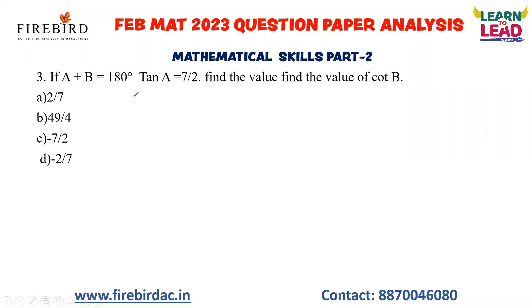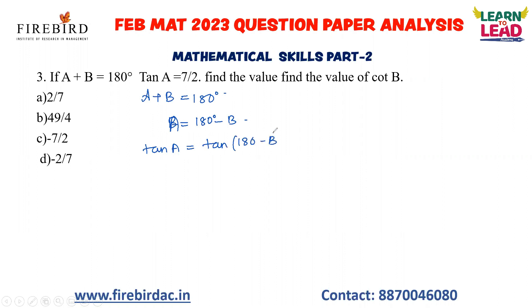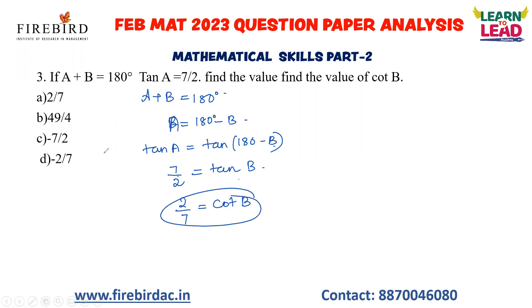This question is based on trigonometry. If you are in last-minute preparation, try to avoid trigonometry equations. Given A + B = 180°, we can write A = 180° − B. So tan A = tan(180° − B) = −tan B. Since tan A = 7/2, we get tan B = 7/2. The question asks for cot B. Since tan and cot are inverses, cot B = 2/7. The answer is 2/7.